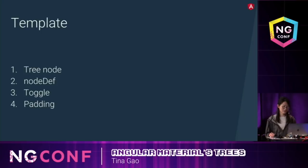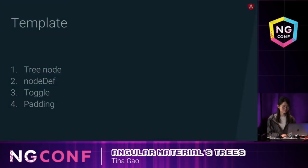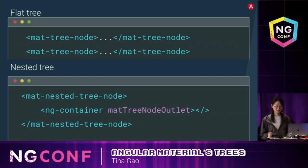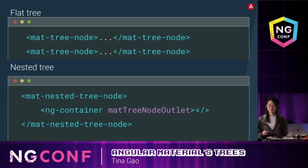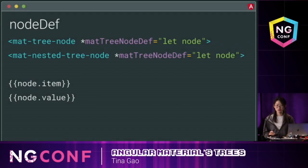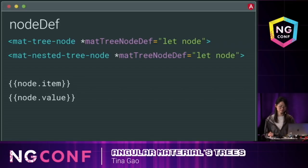Now let's see the templates. We have tree node, node depth, toggle, and padding. To define a tree node, we use mat-tree-node for flat tree and mat-nested-tree-node for nested tree. In nested tree, we also need mat-tree-node-outlet — that's the position where we put all the children of the current node. You can add some decorations around the node outlet. The node def defines the template of the tree and is also passed the node context. So here we pass in node as context, and later in the template we can use node.item or node.value.